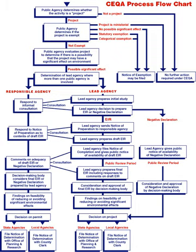If a major federal project or project using federal funds is seeking approval in California, its lead agency must prepare both an EIS and an EIR, but both can be combined into one document since the EIS and EIR have the same elements for the most part. Said document, however, must be processed through both the CEQA and NEPA approval steps.